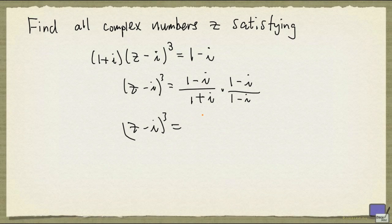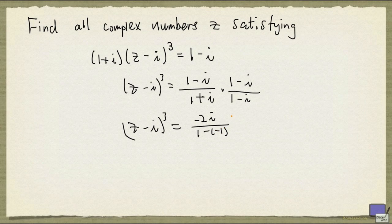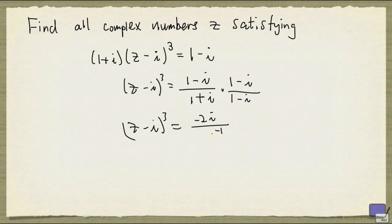And if you work this out, it will be minus 2i in the numerator, and then 1 minus minus 1 in the denominator. And 1 minus minus 1, that's 2. And so this simplifies to minus i.